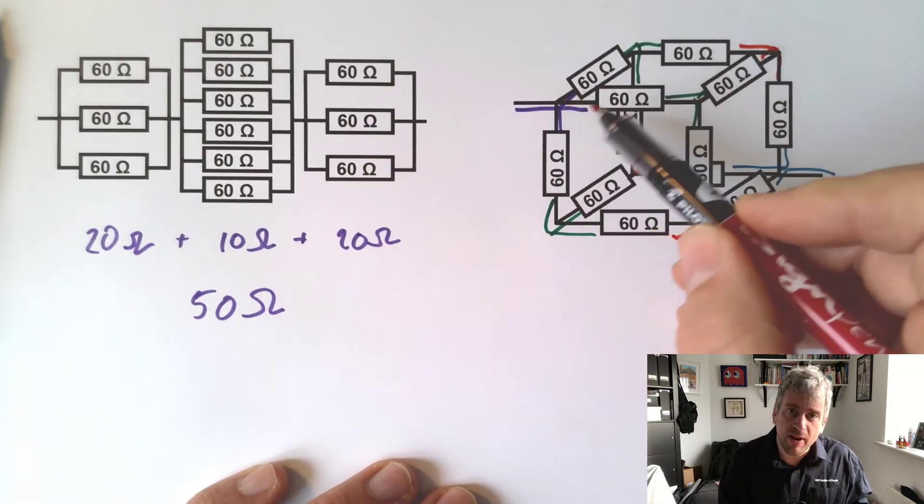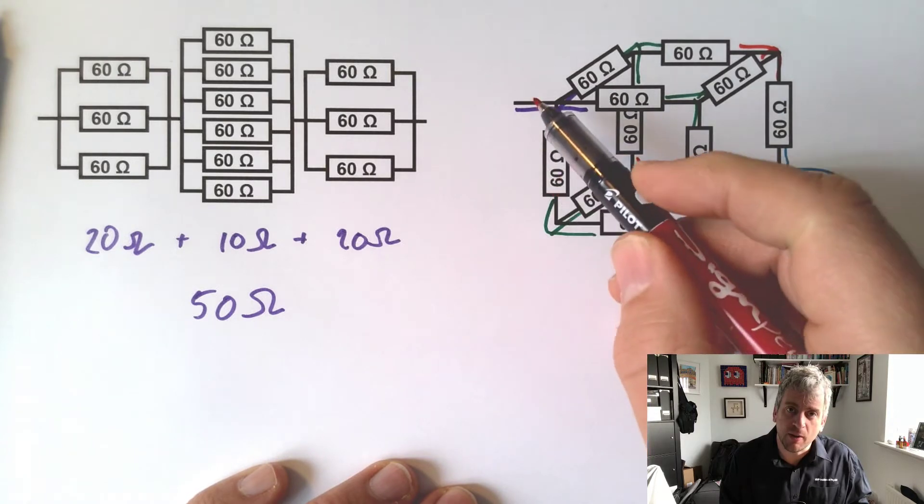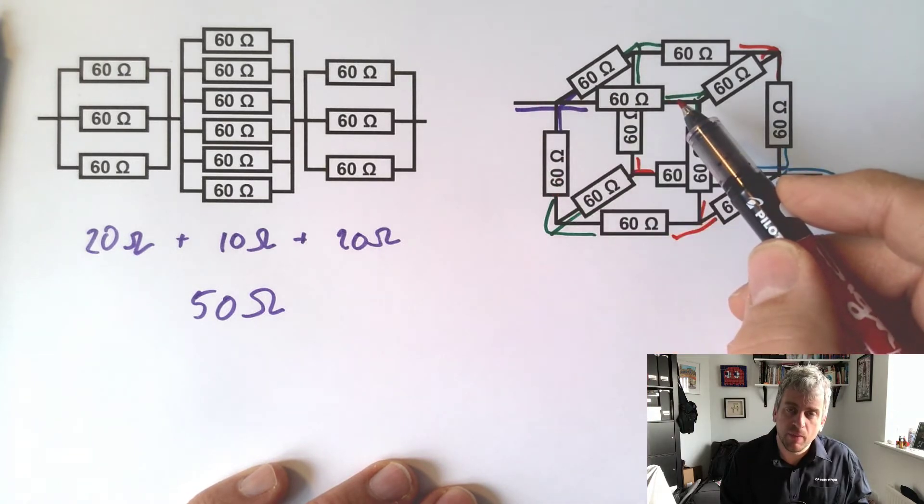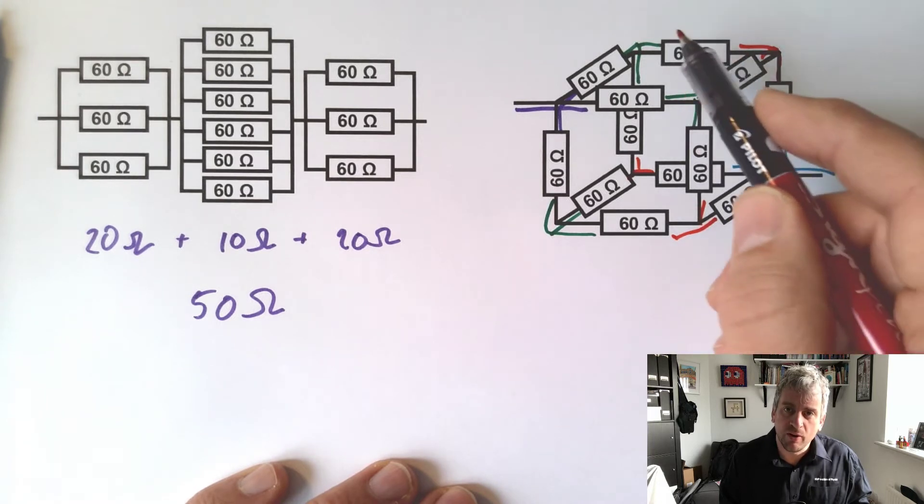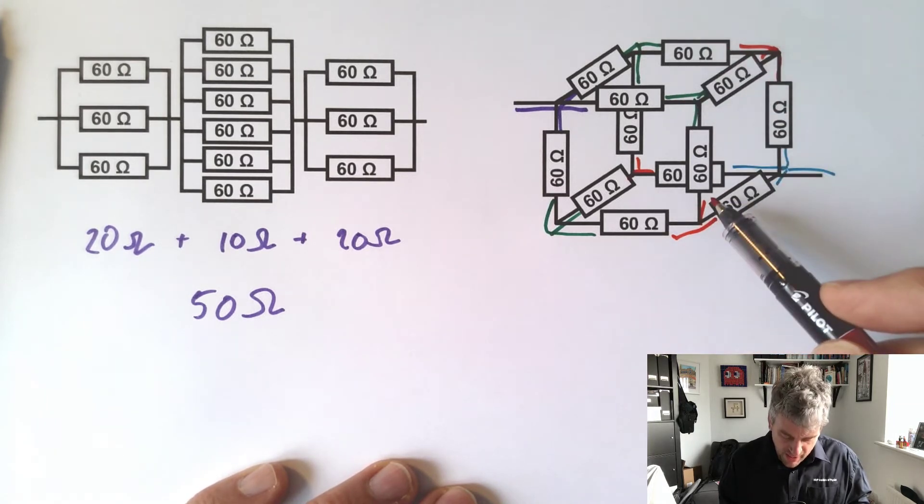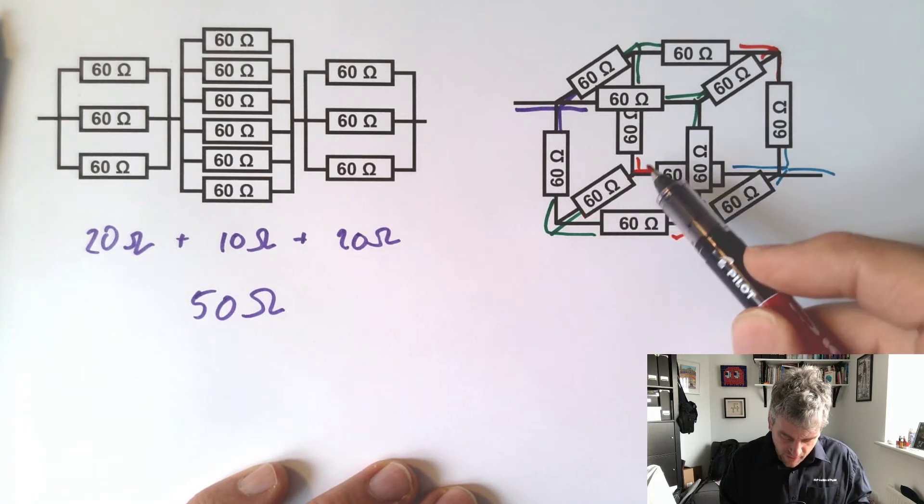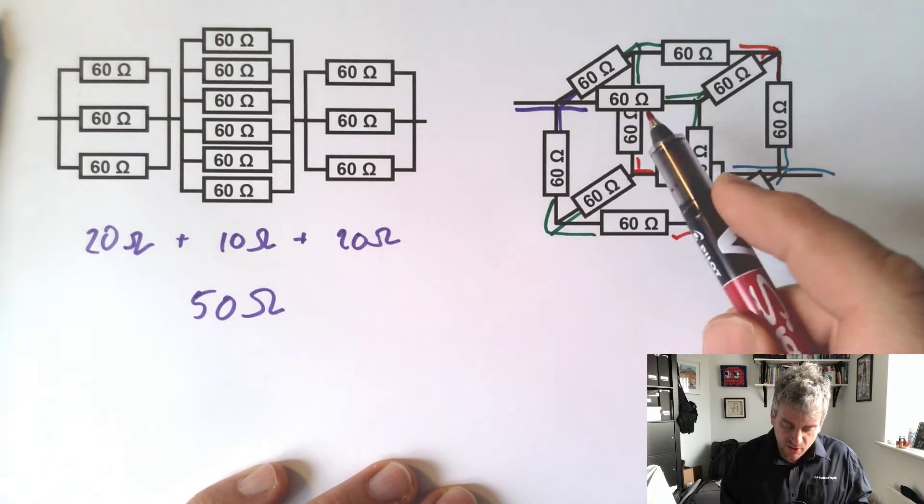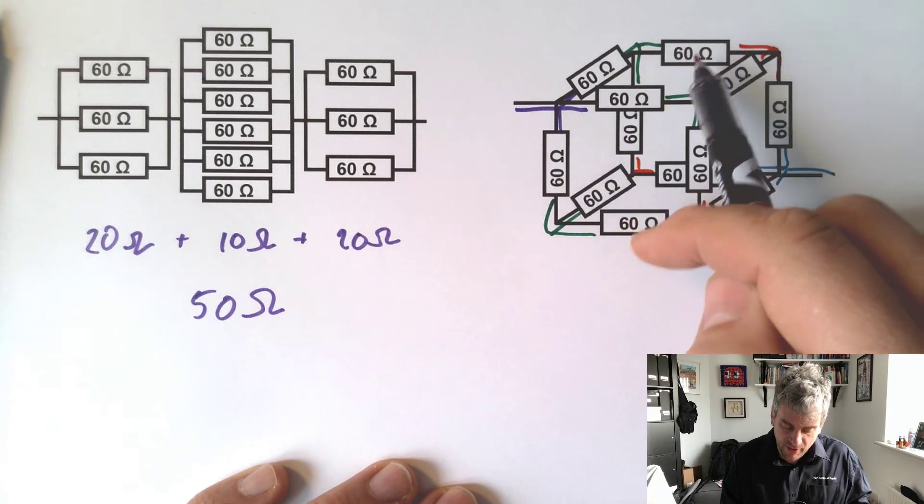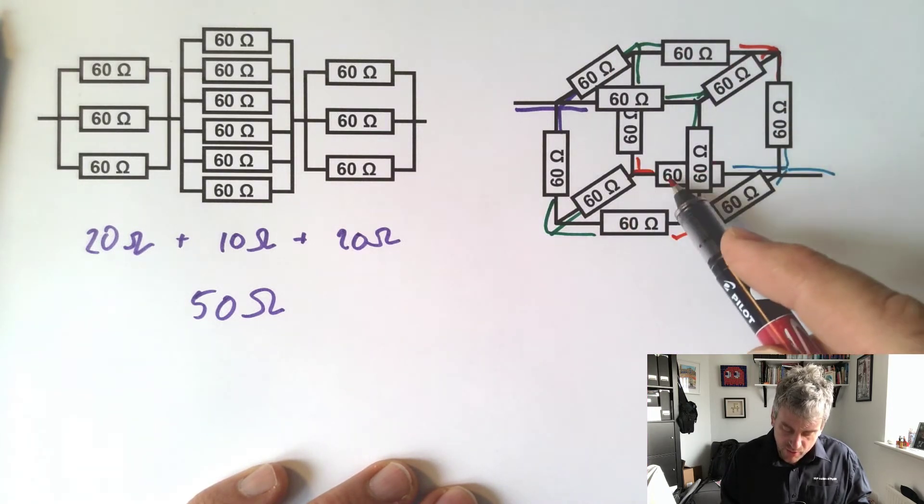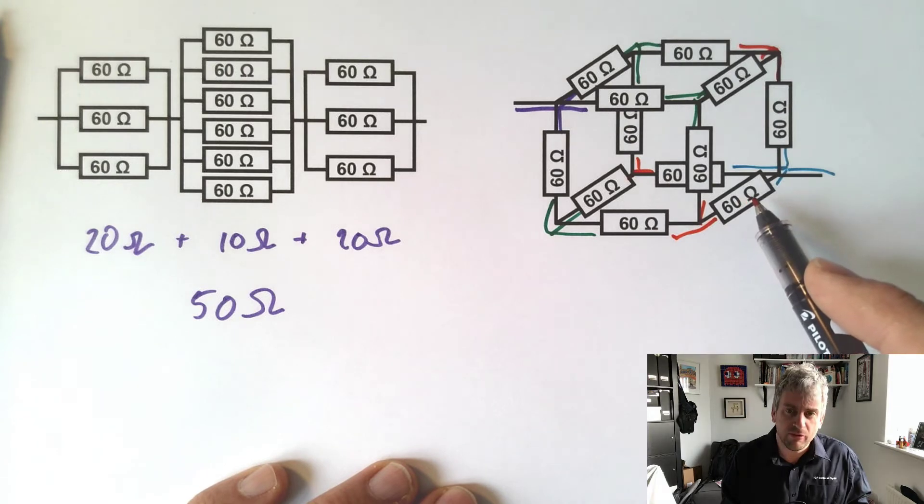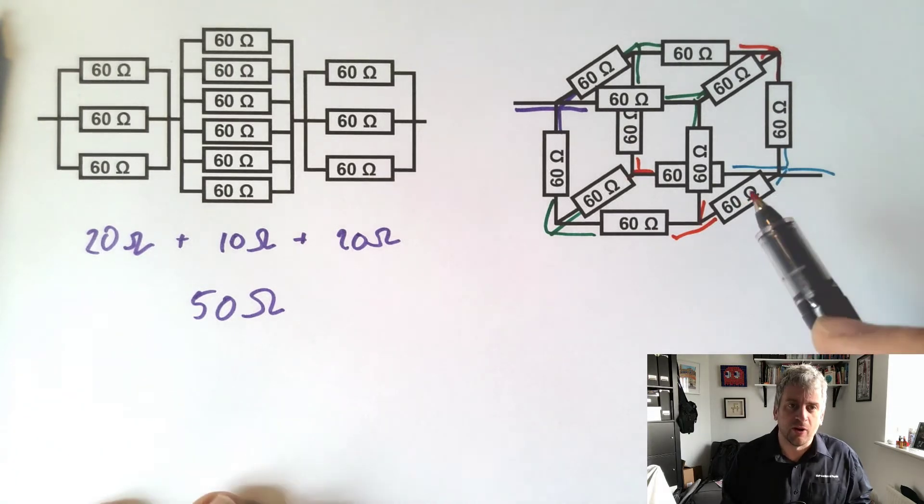So we've got three resistors of 60 ohms going between purple and green. How many resistors have we then got going from green to red? We've got one, two, three, four, five, six. So we have three resistors in parallel, then we've got six resistors in parallel, and then going from red to turquoise, we've got one, two, three. Hang on a minute.